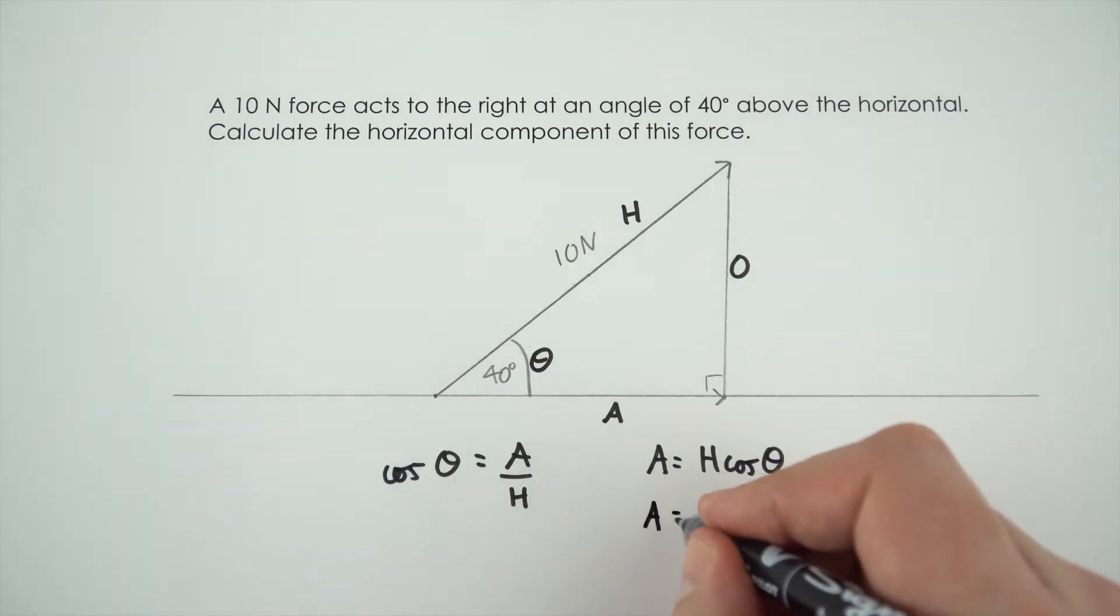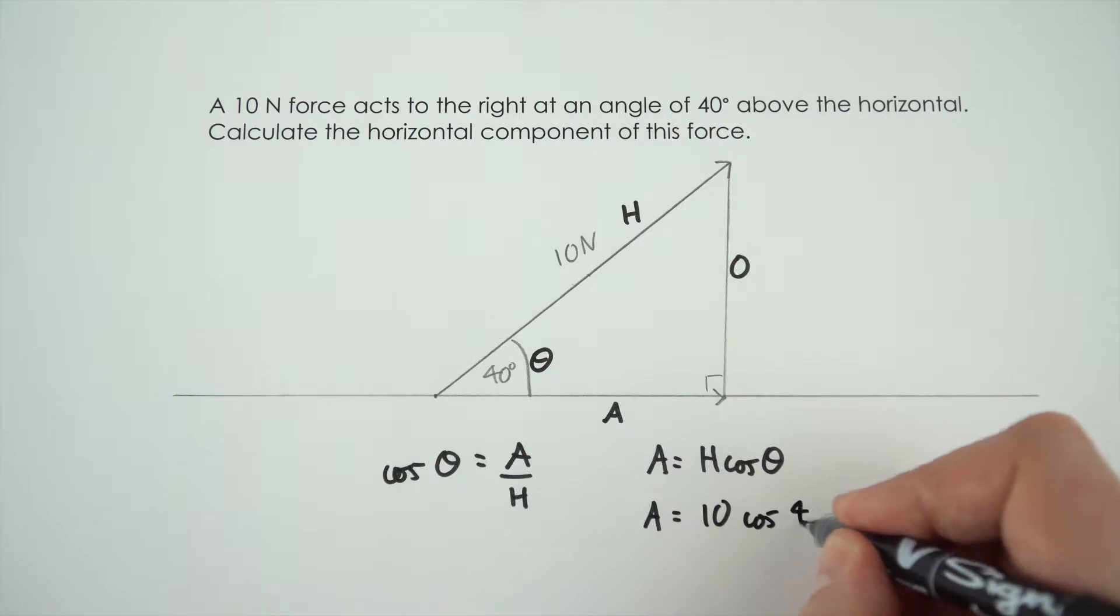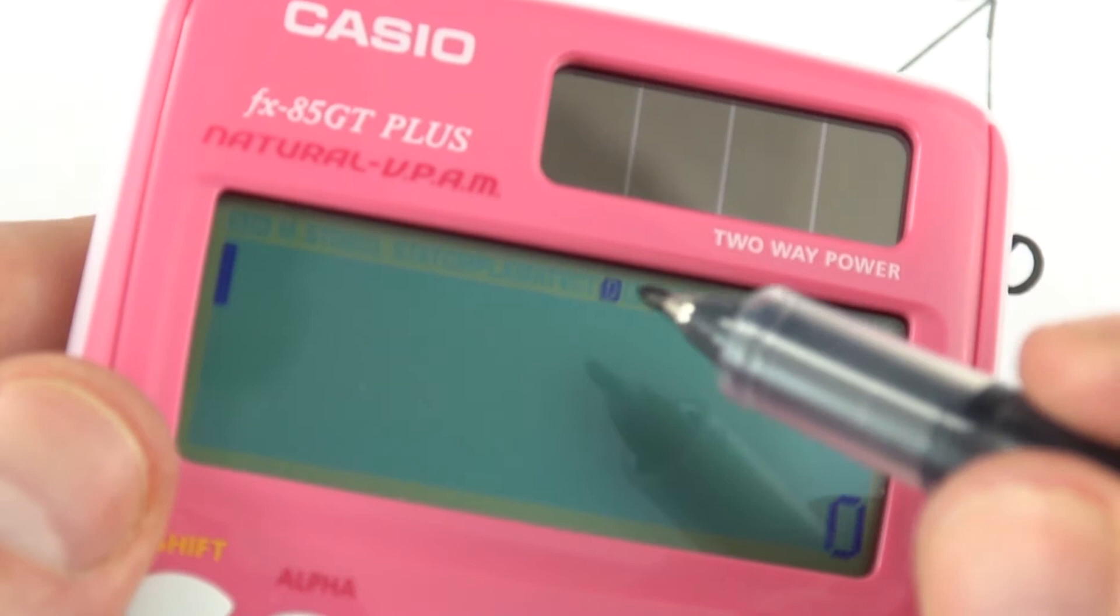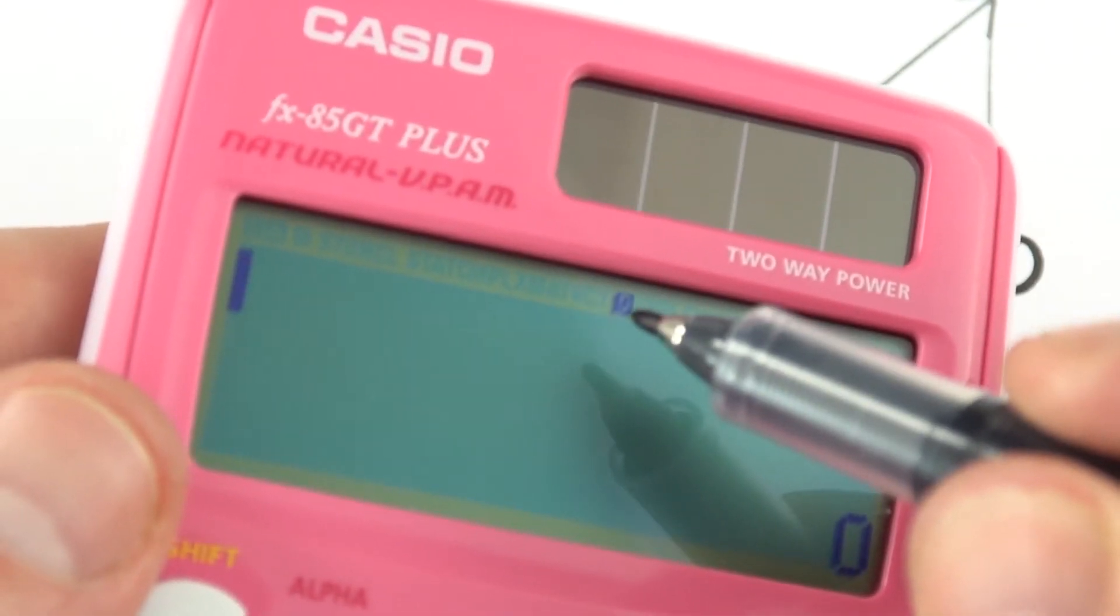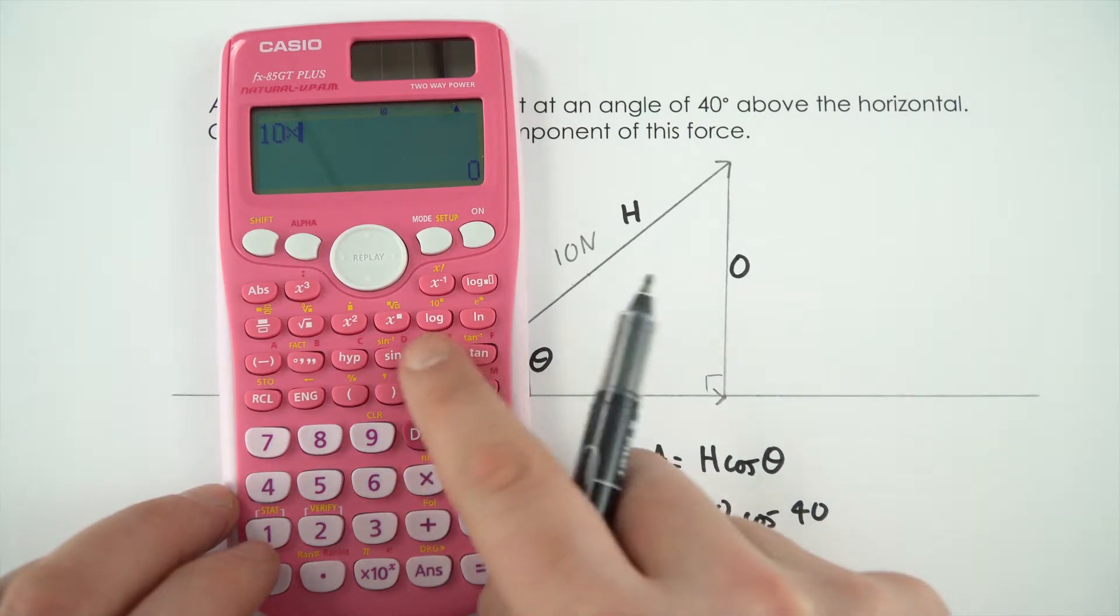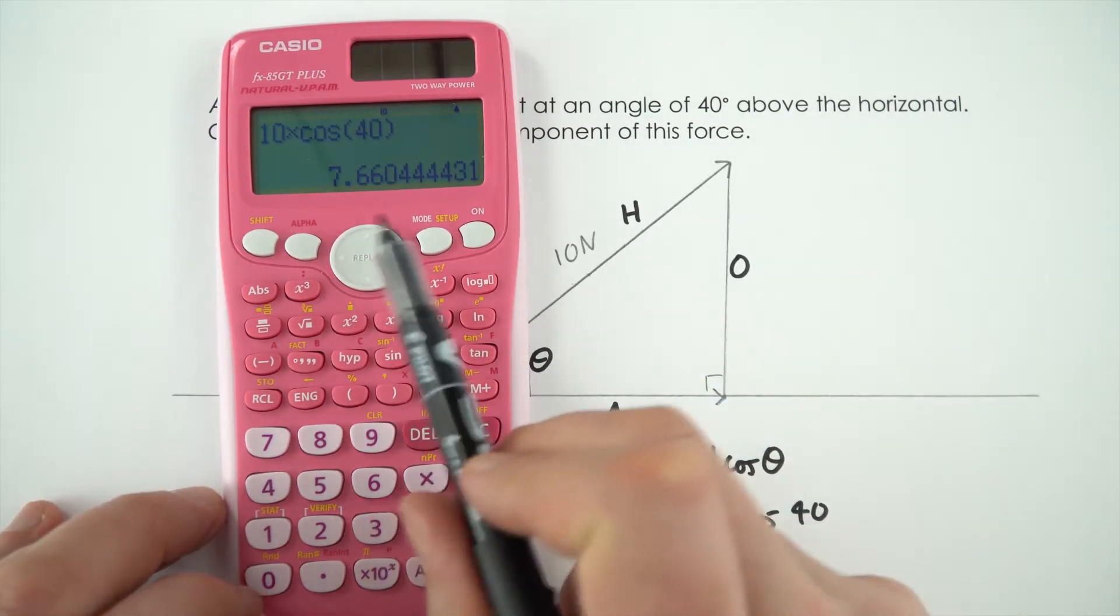That means the length of the adjacent side is equal to 10 times cos 40. Now when I come to do this on my calculator I need to check that this is in degrees mode, so there's a little D at the top of the calculator, and then I'm simply going to do 10 times cos 40. When I do that it gives an answer of 7.66.